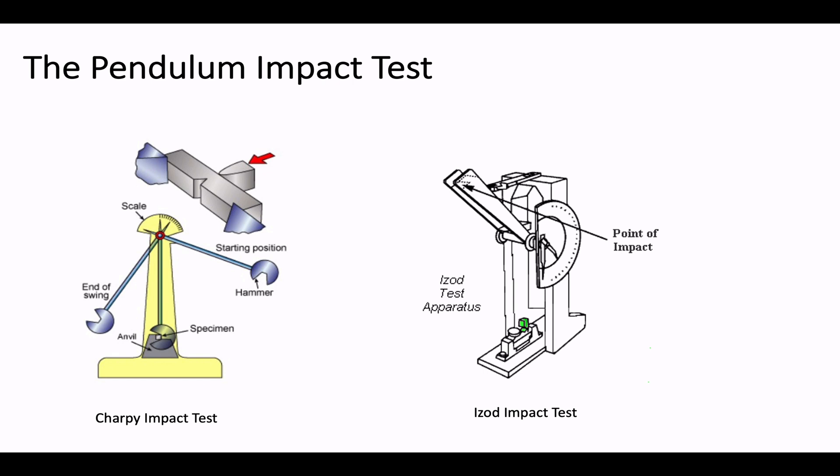In these methods, the pendulum is released and the specimen is broken within a fraction of seconds due to high impact from the swaying pendulum. Hence the name destructive testing.